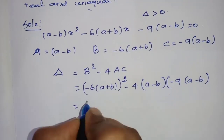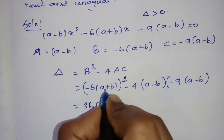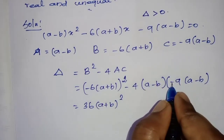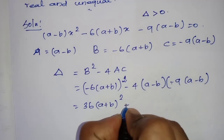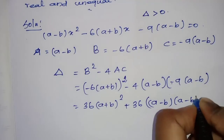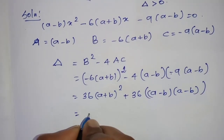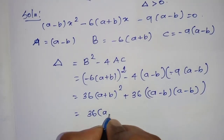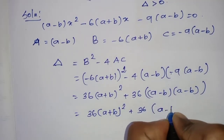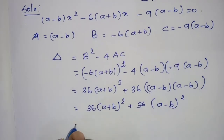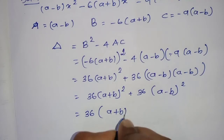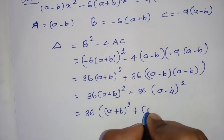That gives 36(a plus b) whole squared, and since minus into minus is plus, 4 times 9 is 36, so we get plus 36(a minus b) whole squared. Taking 36 as common, we get 36 times [(a plus b) whole squared plus (a minus b) whole squared], which is positive.